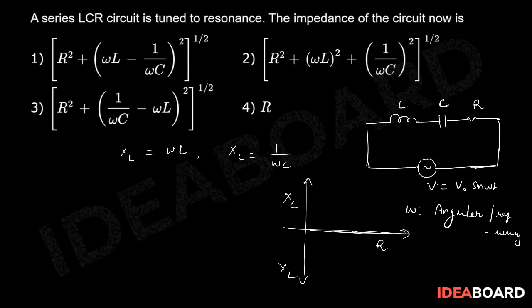So we know that the formula for impedance: mod Z is equal to under root of R square plus XL minus XC square.